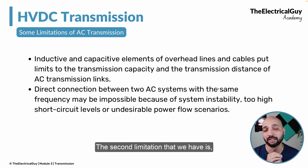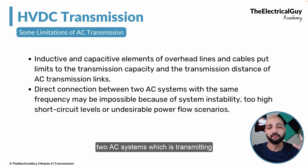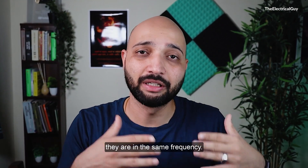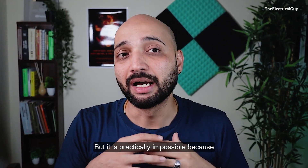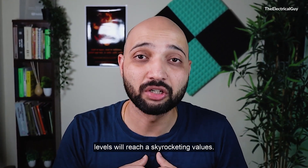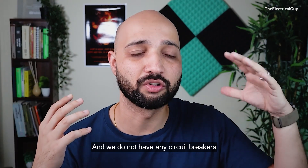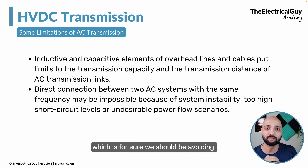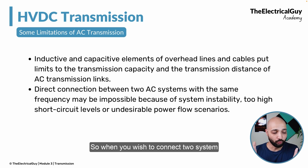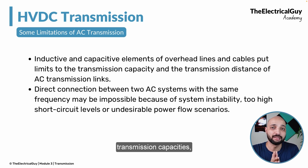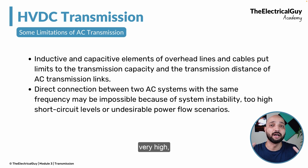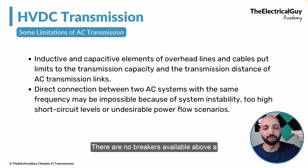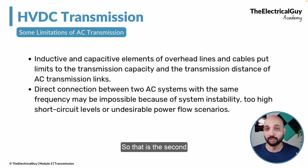The second limitation is that if you have two different AC systems transmitting bulk amounts of power and wish to connect them, it is practically impossible — even if they operate at the same frequency. This is because it is anticipated that short circuit levels will reach skyrocketing values, and we do not have any circuit breakers capable of breaking such high short circuit levels. It can also cause undesirable power flow scenarios.